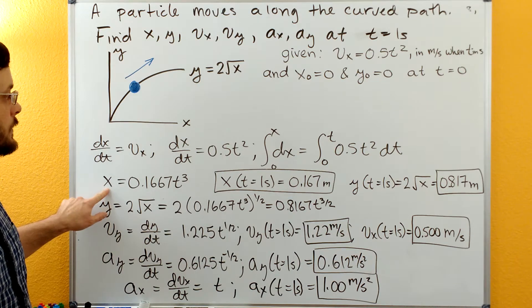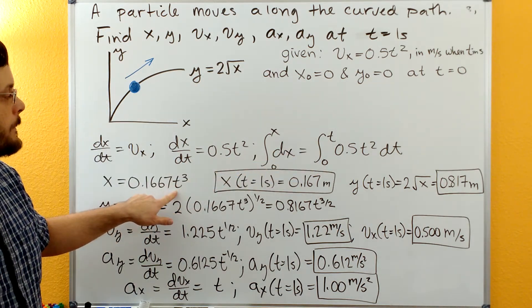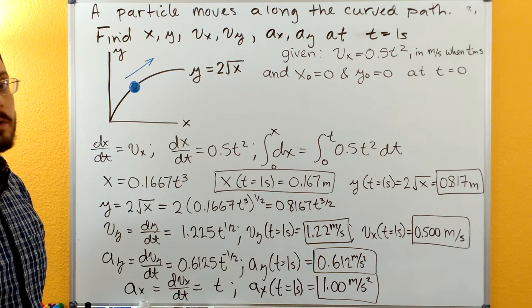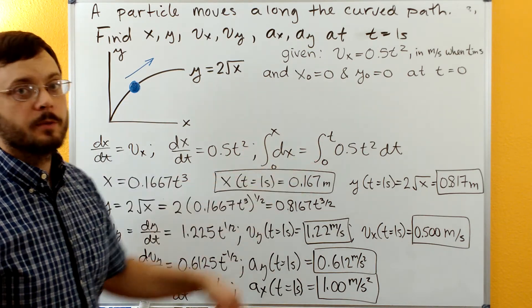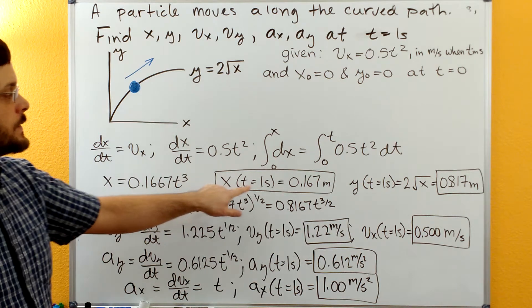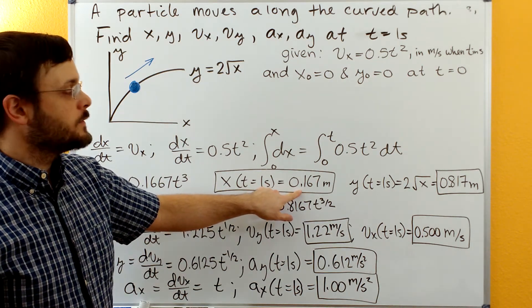We're subtracting off zero, so nothing on this side. And then we'll plug in the limits t equals t minus zero for t, so again nothing to subtract off. But always make sure that you go back and look at your limits and plug your limits in. Then we can get our value for x when t equals one second and get 0.167 meters.